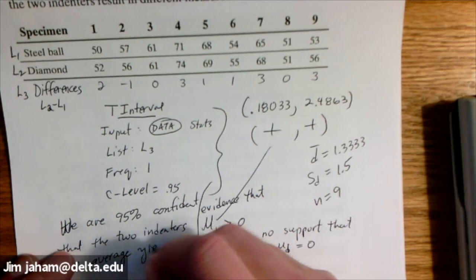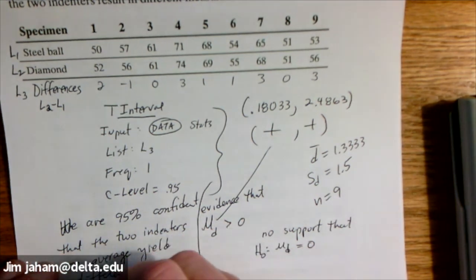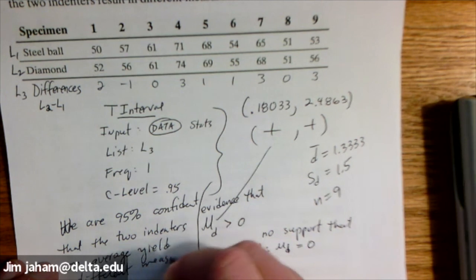So we are 95% confident that the two indenters, on average, yield different measurements.